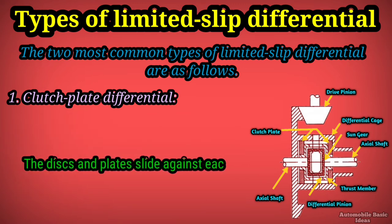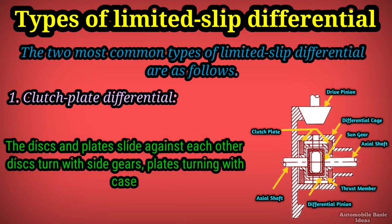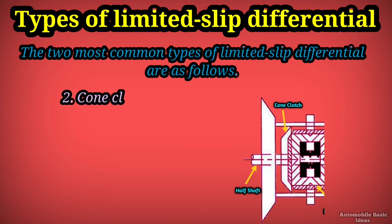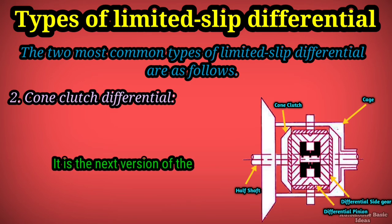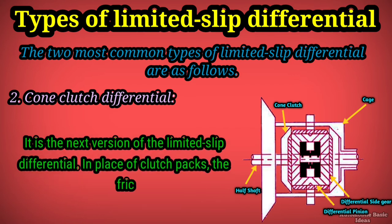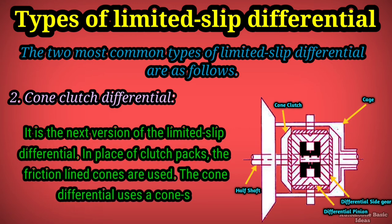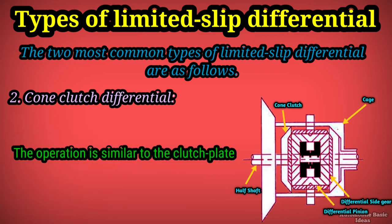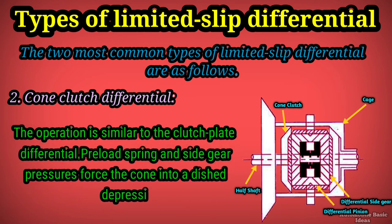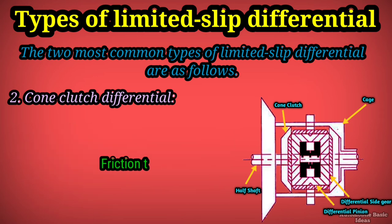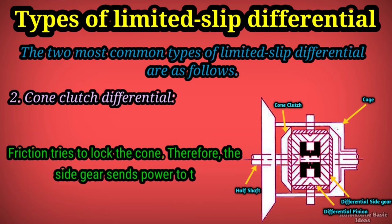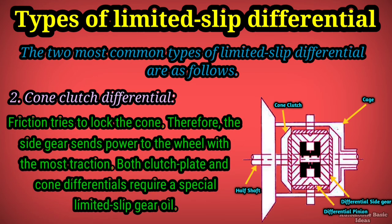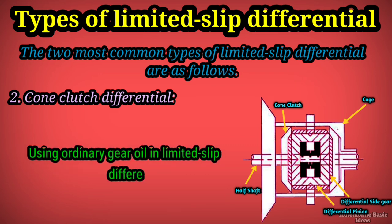During turns, the discs and plates slide against each other — discs turning with the side gears and plates turning with the case — allowing different rotating speeds between the case and side gears so the rear wheels rotate at different speeds. The cone clutch differential is the next version of the LSD. In place of clutch packs, friction-lined cones are used. The cone differential uses a cone-shaped clutch which engages a matching cone-shaped receptacle. Preload spring and side gear pressures force the cone into a dished depression in the differential case, and friction locks the cone so the side gear sends power to the wheel with the most traction. Both clutch plate and cone differentials require a special limited slip gear oil; using ordinary gear oil will cause the discs, plates, or cones to slip and vibrate during turns.